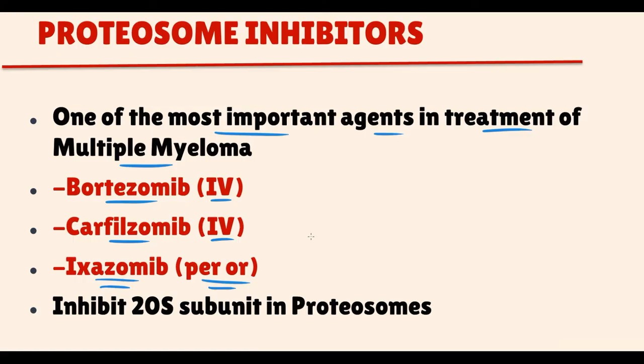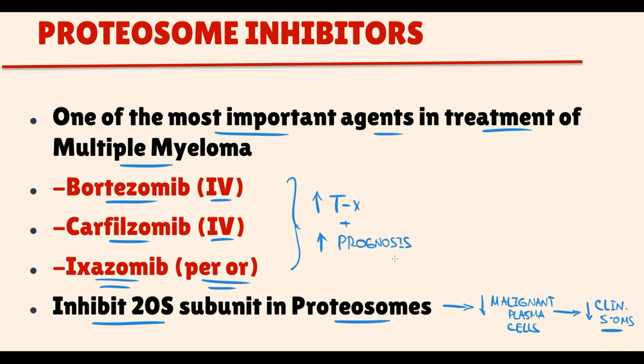So bortezomib, by inhibition of proteosomes, decreases the amount of malignant plasma cells in the bone marrow. The lower is the amount of malignant plasma cells in the bone marrow, the less severe become clinical symptoms. Proteosomal inhibitors greatly improve treatment efficiency and prognosis in patients with multiple myeloma.